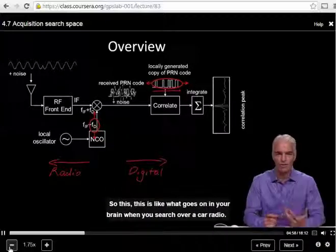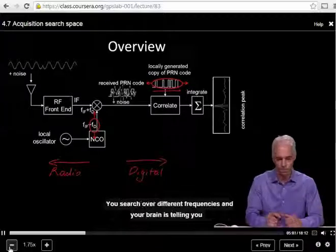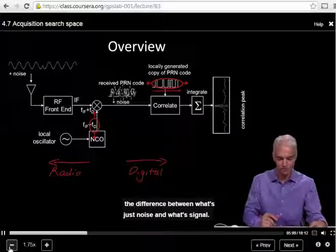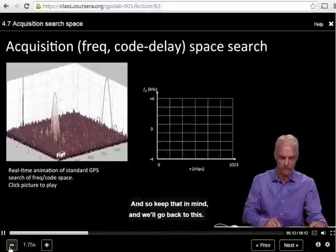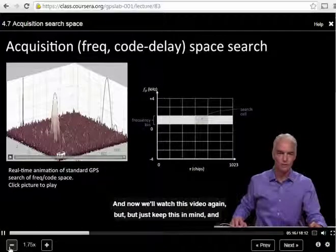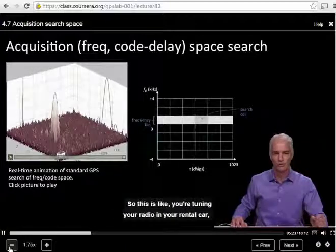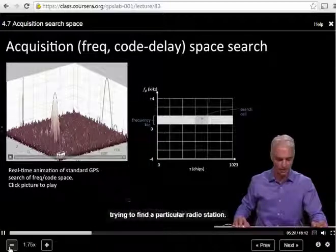So this is like what goes on in your brain when you search over a car radio. You search over different frequencies, and your brain is telling you the difference between what's just noise and what's signal. So keep that in mind, and we'll go back to this. And now we'll watch this video again, but just keep this in mind, and then you'll remember what's going on inside your GPS receiver. So this is like you're tuning a radio in your rental car, trying to find a particular radio station.